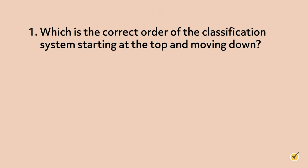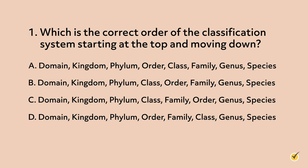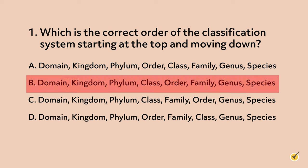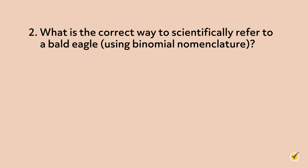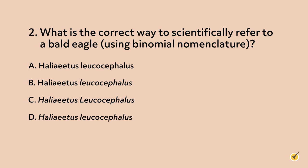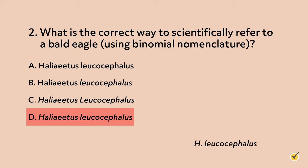Now that we've covered how organisms are classified, here are a couple of review questions to test your knowledge. Number one: which is the correct order of the classification system starting at the top and moving down? The correct answer is B. Remember the mnemonic we talked about — King Philip can only find green socks. Number two: what is the correct way to scientifically refer to a bald eagle using binomial nomenclature? The correct answer is D. Remember that when we use binomial nomenclature, the genus is always capitalized while the species stays lowercase, and both words are written in italics. Another perfectly acceptable way to write this would be by abbreviating the genus to the first letter followed by a period — so H. leucocephalus. I hope this review was helpful. Thanks for watching and happy studying!